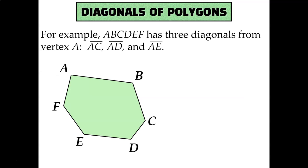So for example, if I wanted to draw all of the diagonals from vertex A, I would start at A and go to C and D and E. Those are the three diagonals that I can draw from vertex A. A to B is not a diagonal because it's one of the sides of the polygon, and A to F is also not a diagonal because it's one of the sides of the polygon.